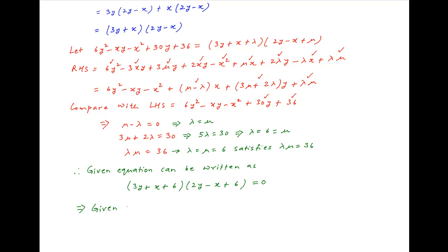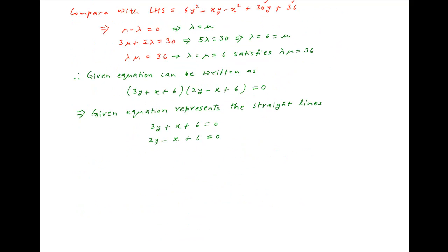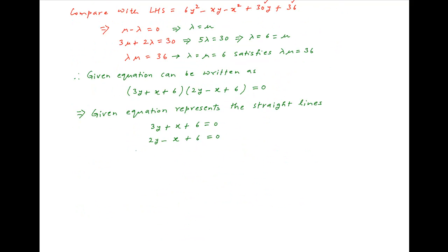This means that the given equation represents two straight lines: 3y + x + 6 = 0, and 2y - x + 6 = 0. Let's denote these two equations by 1 and 2 respectively.